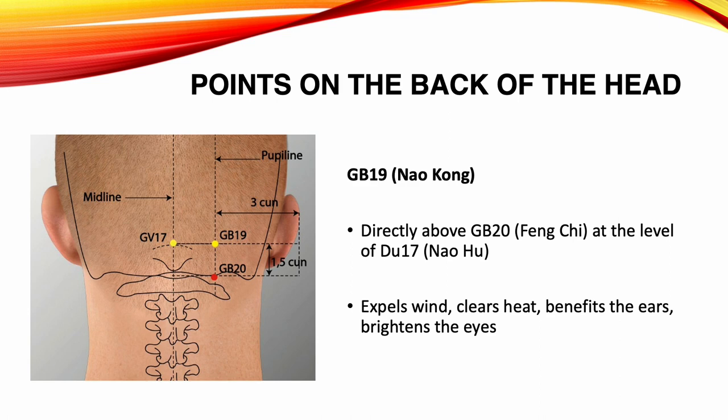Gallbladder 19, Nao Kong. Location: directly above Gallbladder 20, at the level of Du 17. Functions: expels wind, clears heat, benefits the ears, brightens the eyes. Indications: headache, dizziness, stiffness of the neck, tinnitus, blurred vision, seizures, mental disorders.